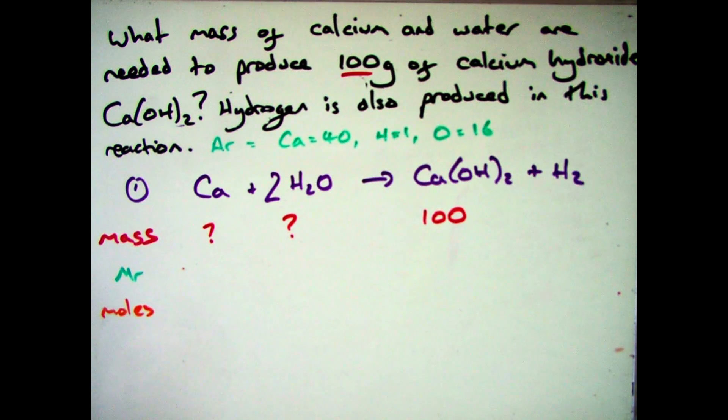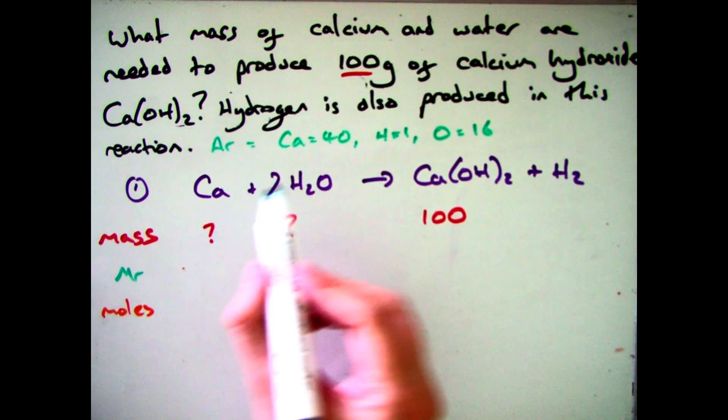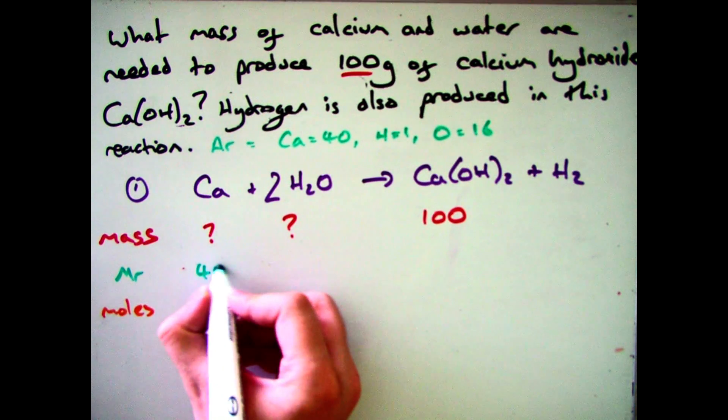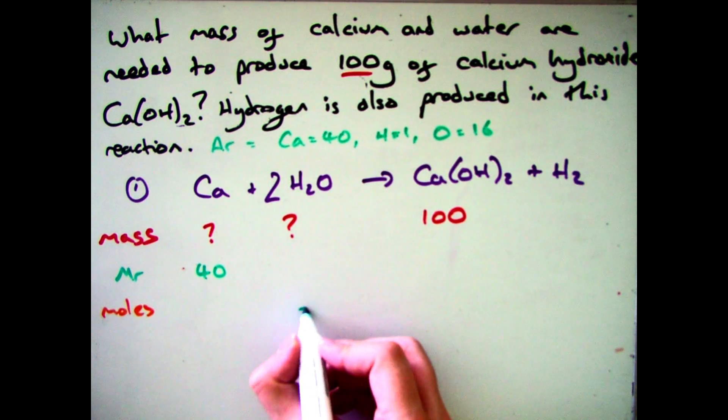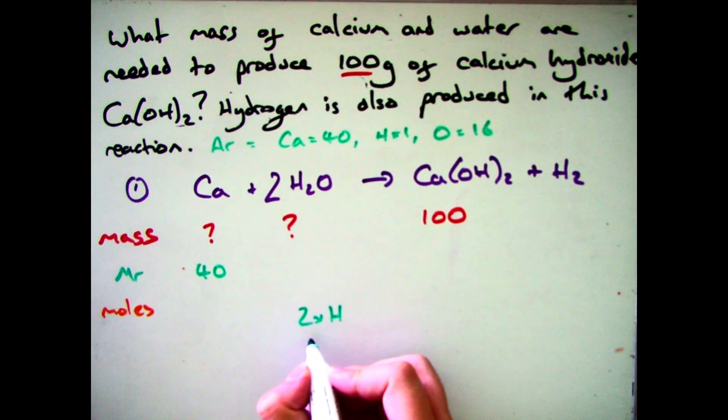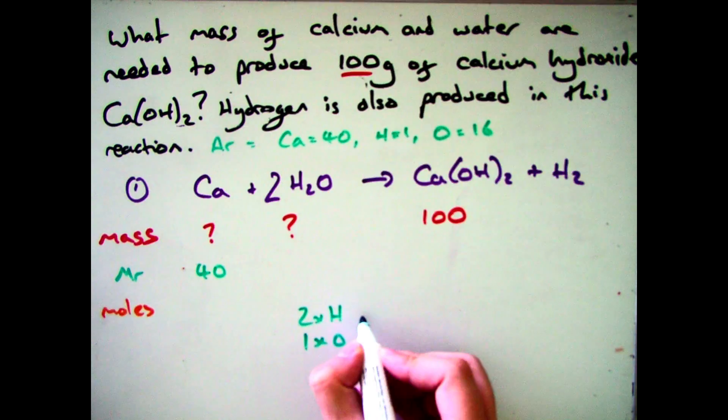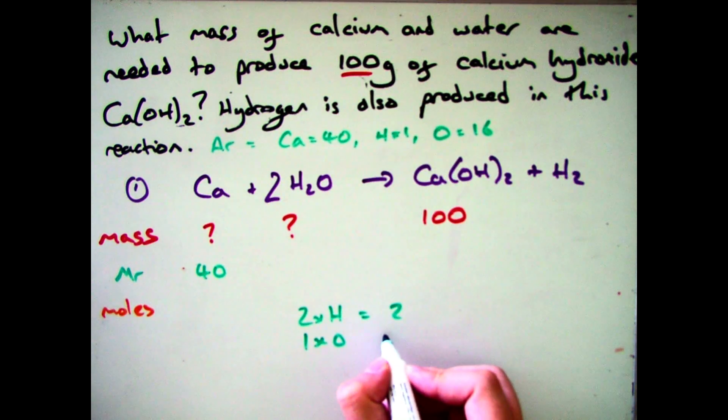So the next thing is to put in the molecular mass, the MR. So calcium, I've got one of them so it's 40. So for water then, I've got two hydrogens, so that's two times one. And oxygen, I've only got one of, so that's one times oxygen. So that gives me two plus 16 is 18. However, because it's balanced, I've now doubled the equation. So it's 18 times two, which gives me a molecular mass of 36.